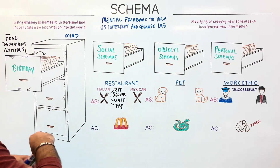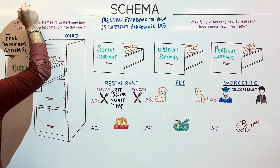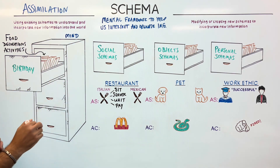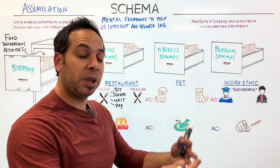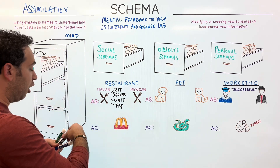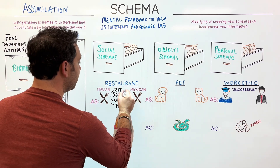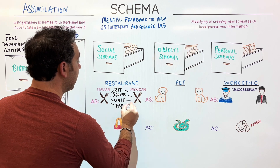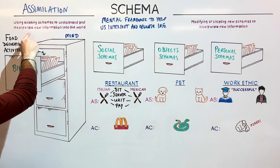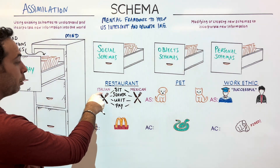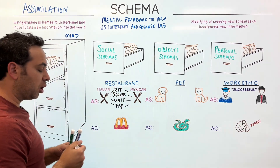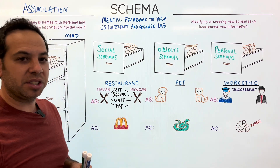This is what we mean by assimilation. Assimilation is when we take our existing schema and when we experience new information, we can apply it so we know what to expect and what to do. So when I go to a Mexican restaurant, I know similarly that I'm going to sit, I'm going to have a server, I'm going to wait, and I'm going to pay at the end. You also notice that we don't just use our existing schemas, but we incorporate new information — I might add that I know I'm going to get bread at an Italian restaurant first, or chips and salsa at the table first. So we can also add information to our schemas.